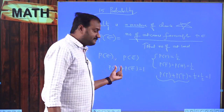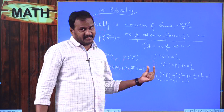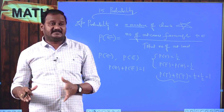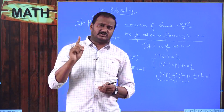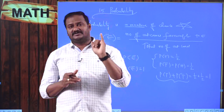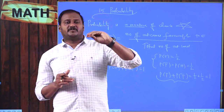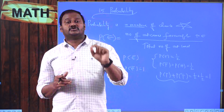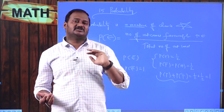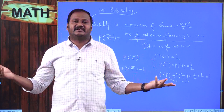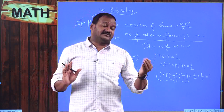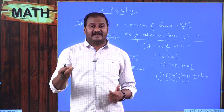Probability of getting an event plus probability of not getting an event equals 1, and probability of getting any event should not exceed 1. For example, I have 5 natural numbers: 1, 2, 3, 4, 5. If the event is that I should get a natural number less than 6, all 5 numbers are less than 6, so definitely whatever number I take, it is less than 6.